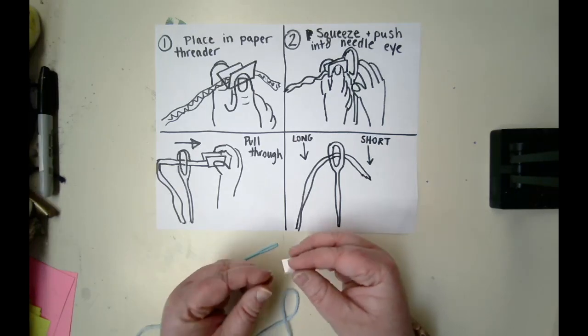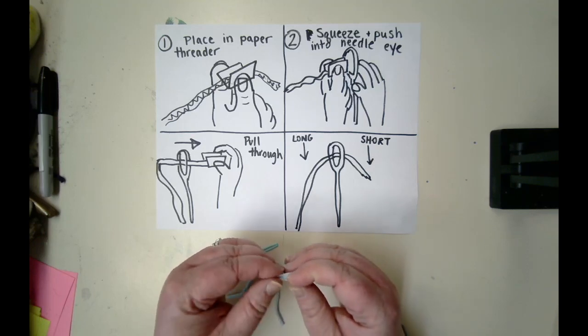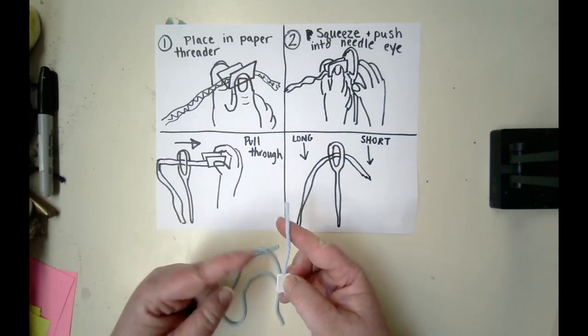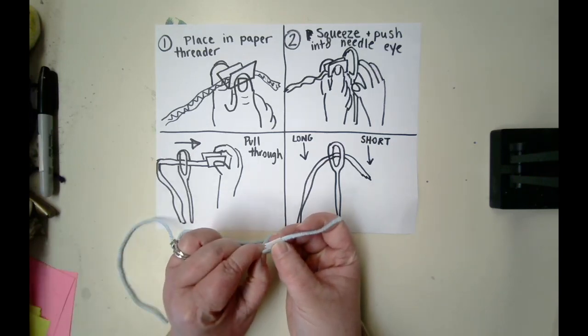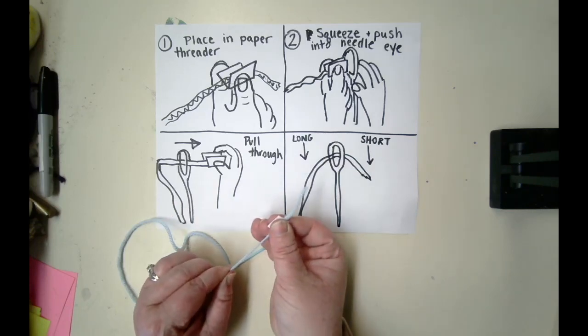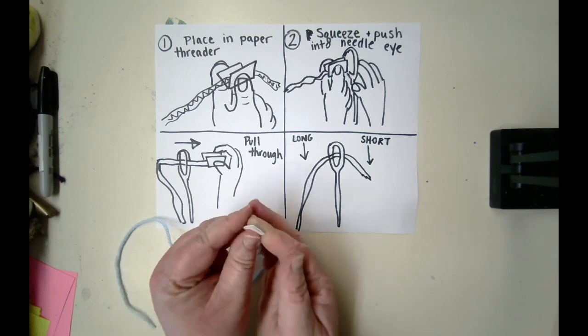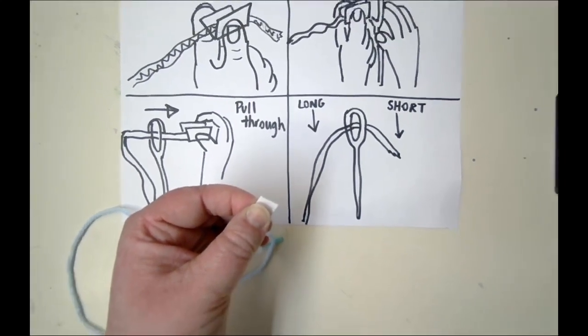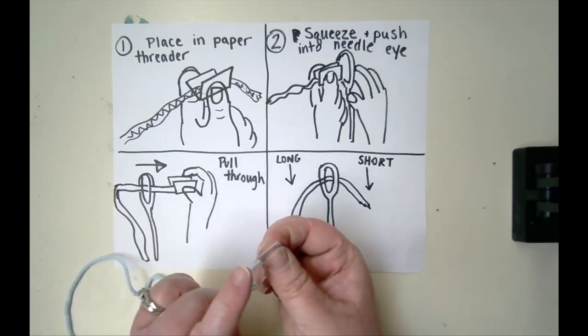Step one, we're going to be placing our string into our paper threader. Sometimes I refer to this as a hot dog bun because of the way that it closes. Notice that I have an end popping out one side and an end popping out the other. I'm going to take this and guide my string back so that I don't have any extra sticking out.